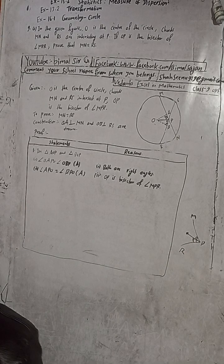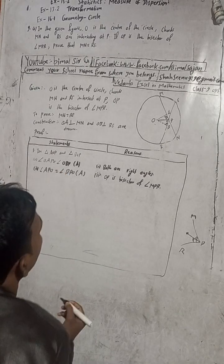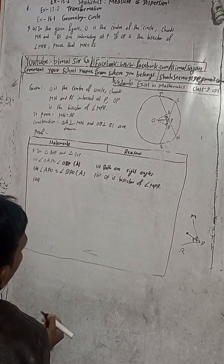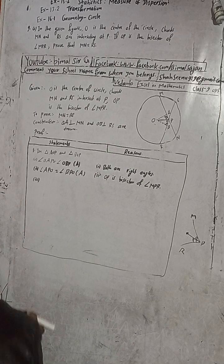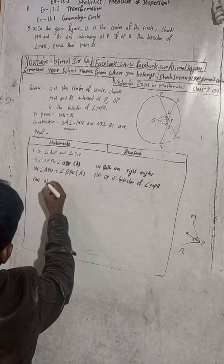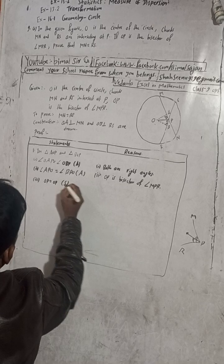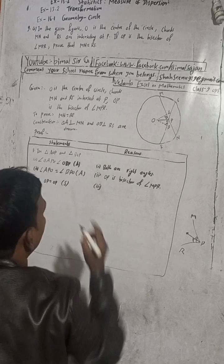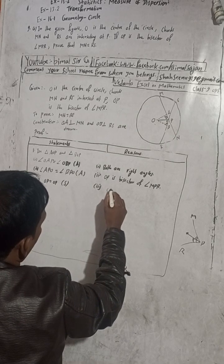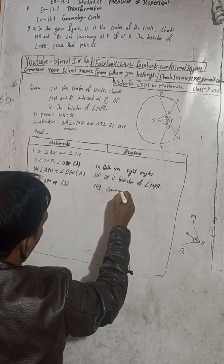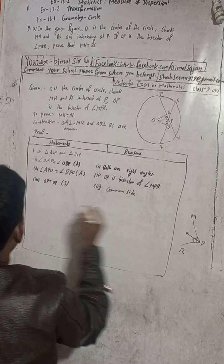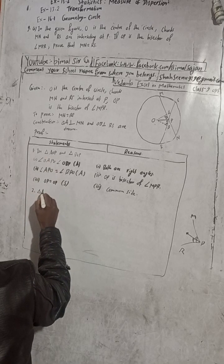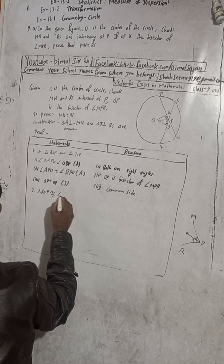Angle APO is equal to angle BPO. The third step: OP is equal to OP — common side. Therefore, triangle AOP is congruent to triangle BOP.